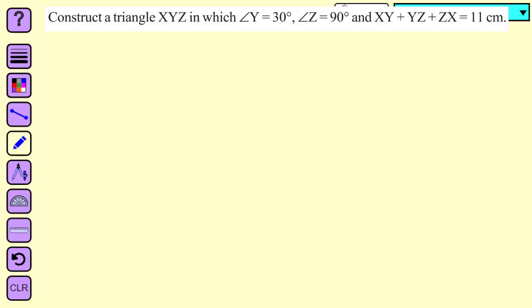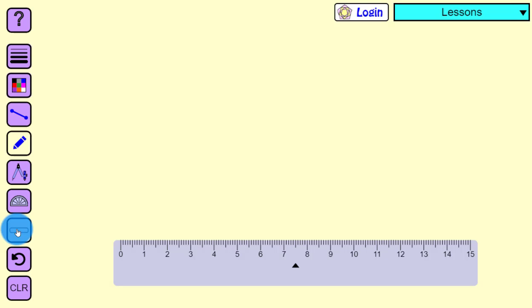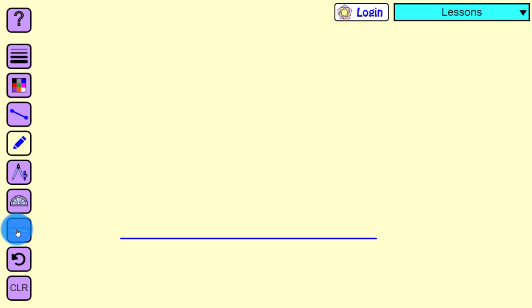Let us start. First, draw a line segment of 11 centimeters and call it AB. Our next step is to make an angle of 45 degrees at point A.